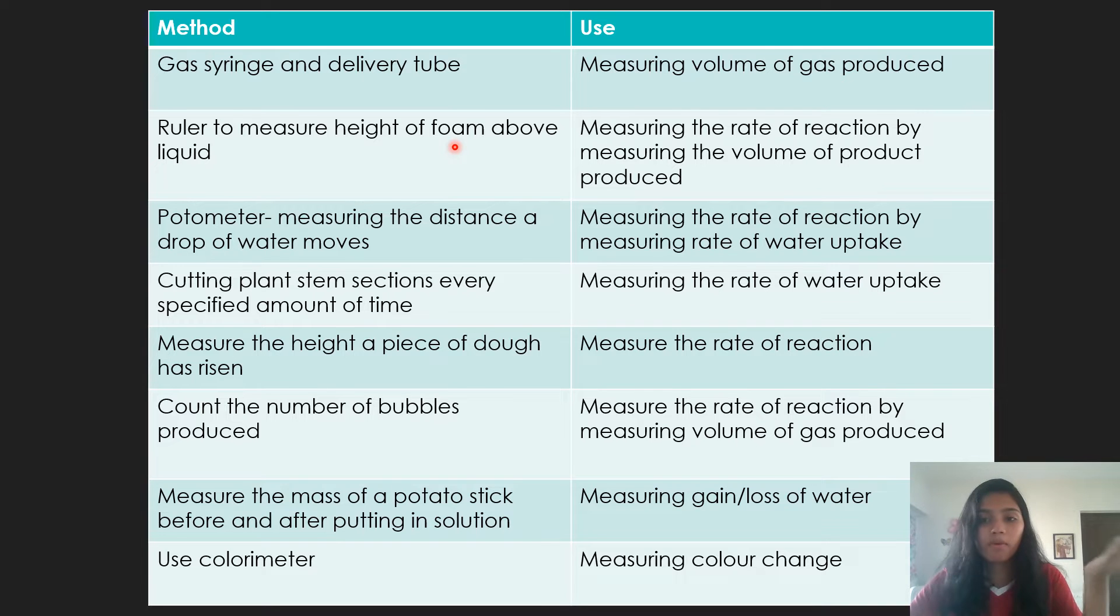Then you can also use a ruler to measure basically when oxygen or a gas is produced, there may be foam above a liquid. It's come in many experiments including the specimen 2023. So if you use a ruler to measure the height of the foam above the liquid, you can basically measure the volume or the amount approximately of the gas produced in the experiment and you divide the height by time to find the rate. So centimeter per second.